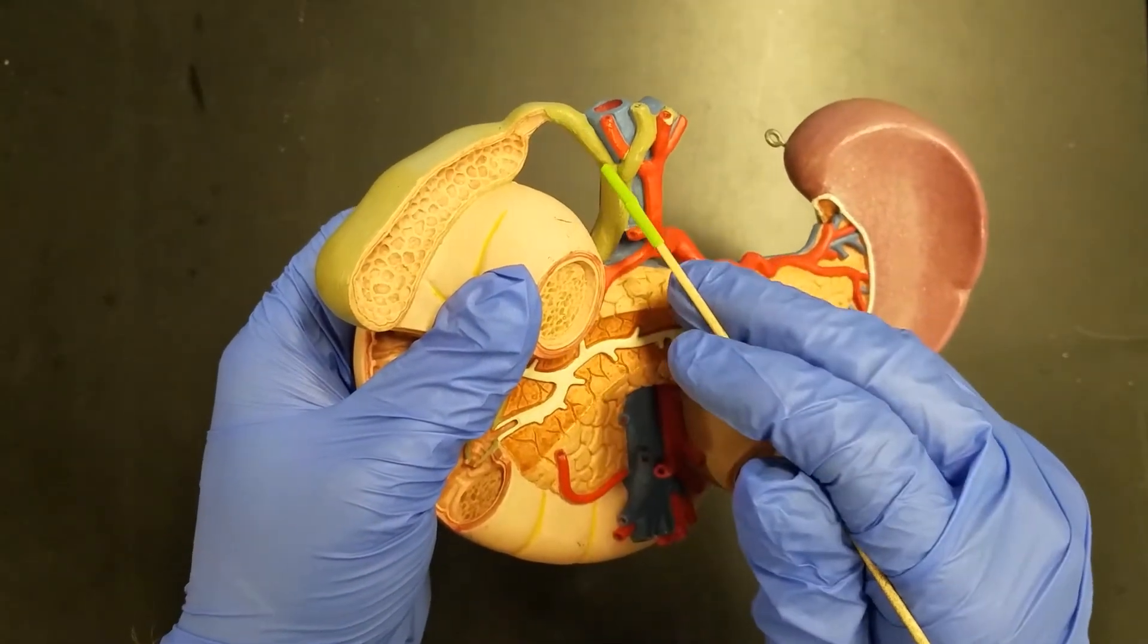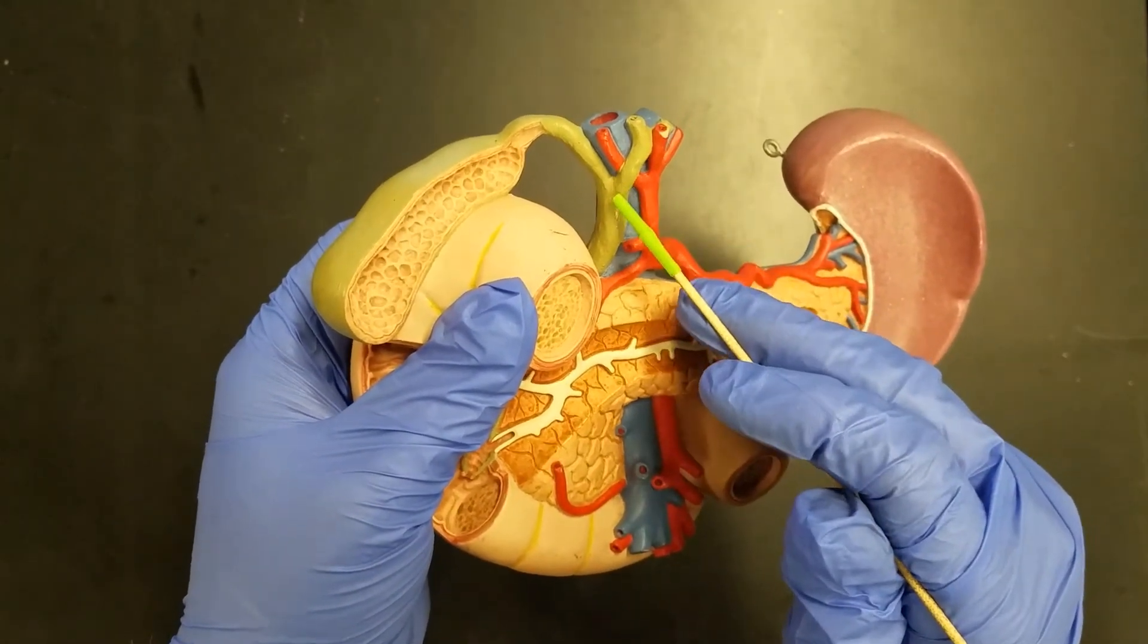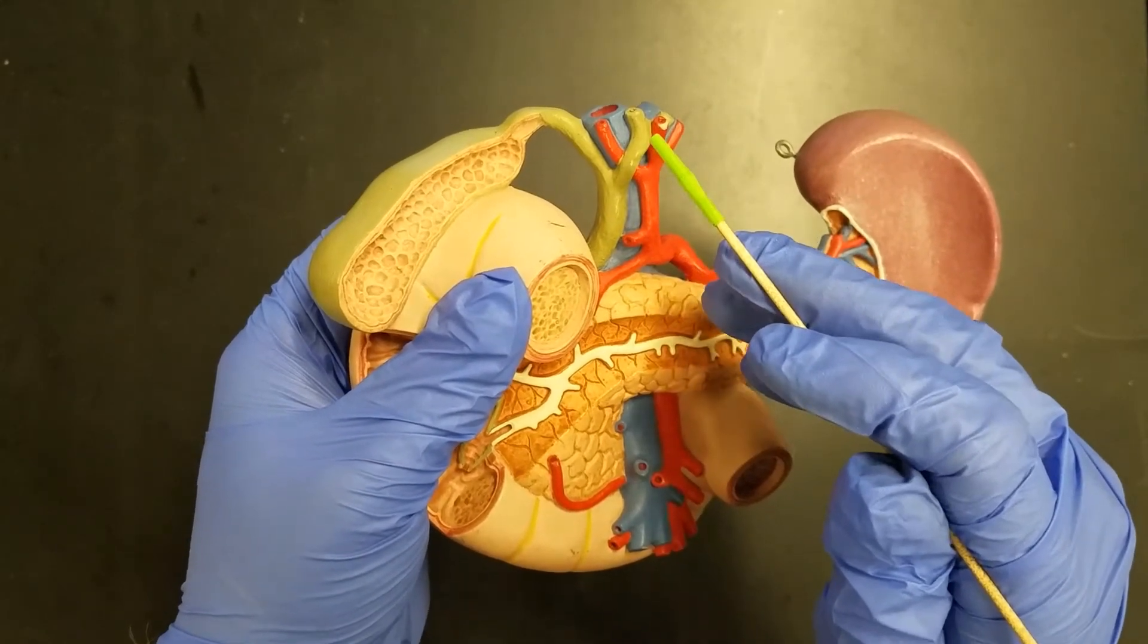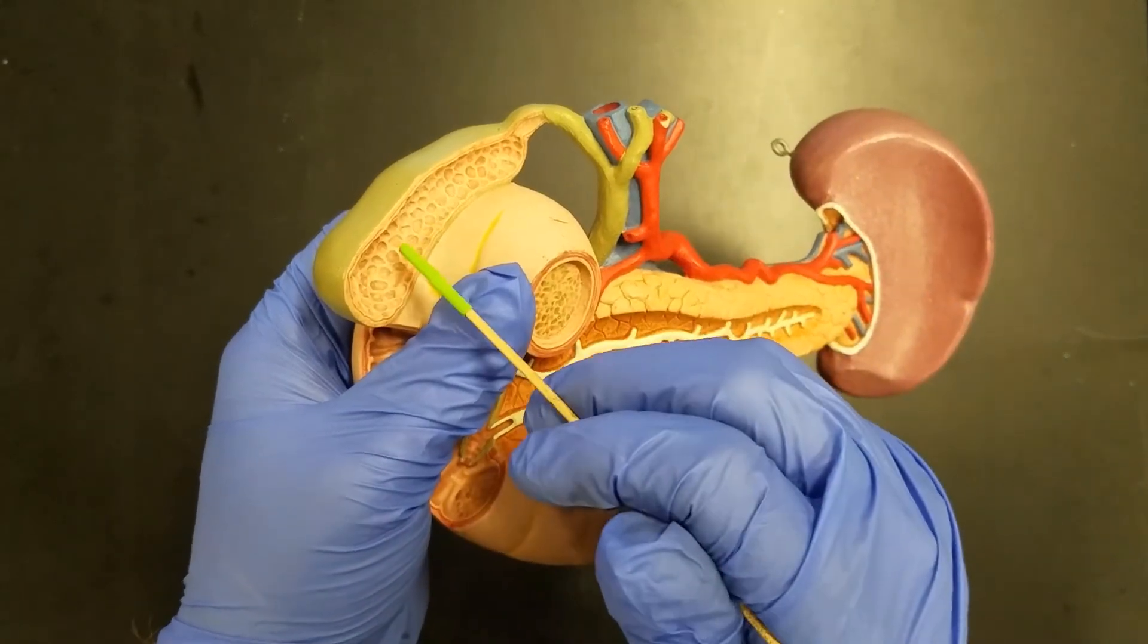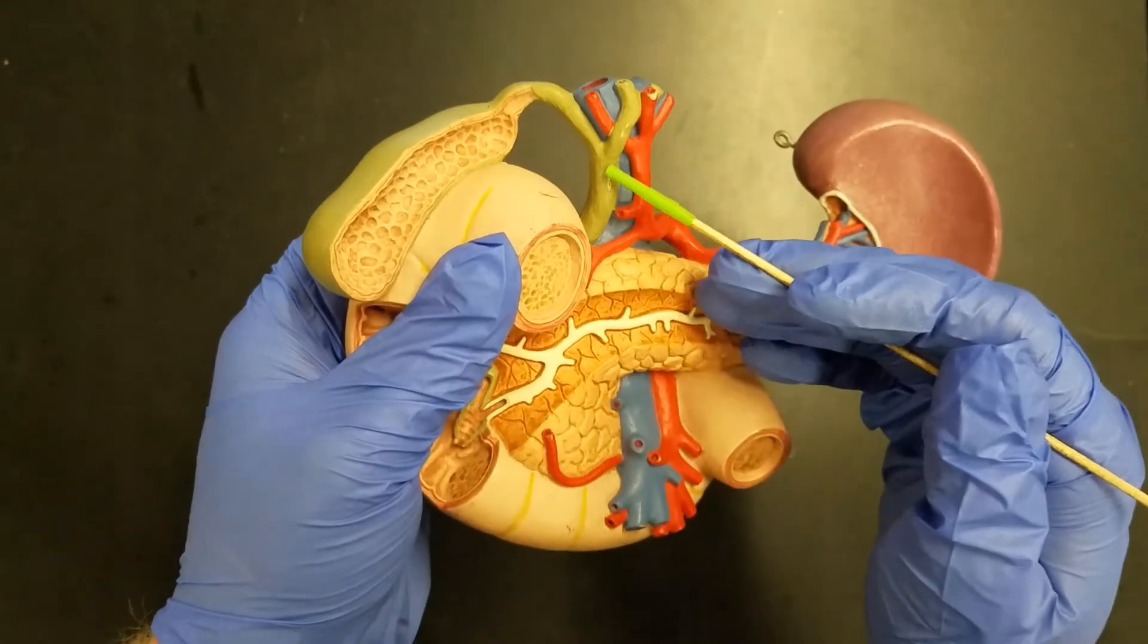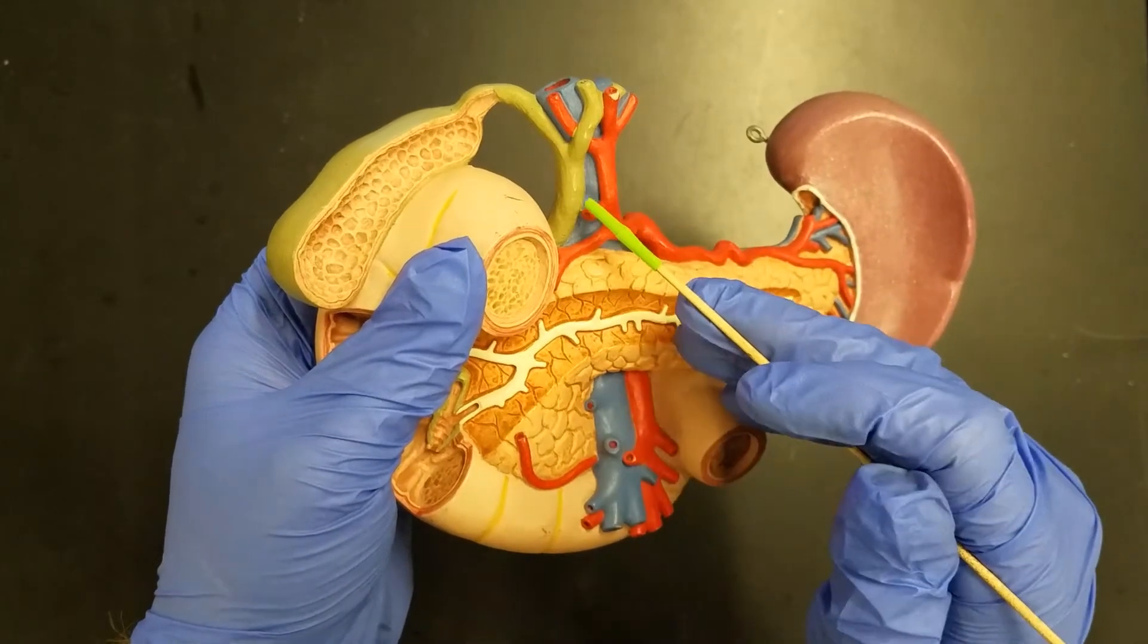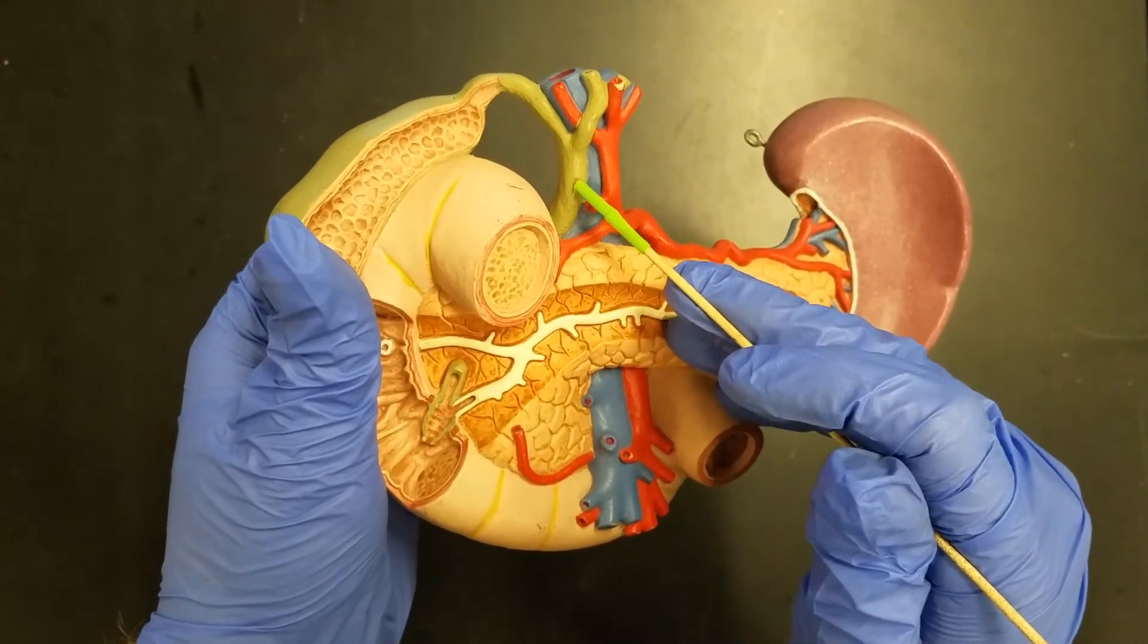Now where the cystic duct and the common hepatic duct join together, we now have bile draining from the liver and from the gallbladder. So this large passageway that forms after the merger of the common hepatic and cystic duct is called the common bile duct.